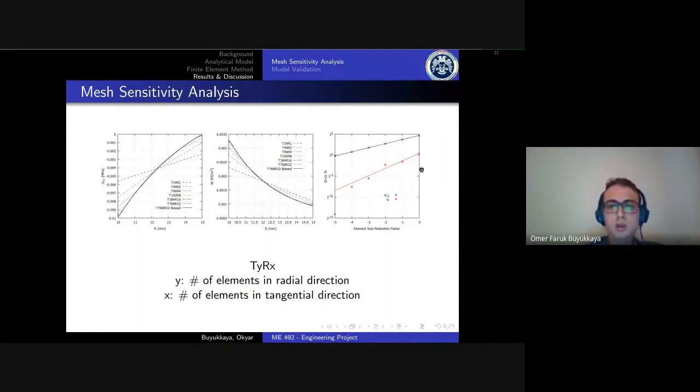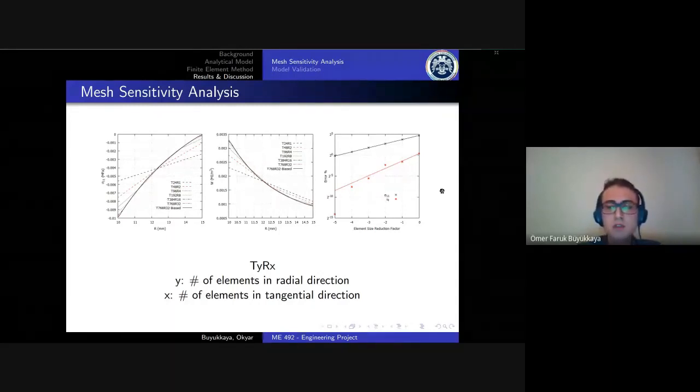We can see the displacement values converge much faster when compared to the radial stress. This is because finite element calculates the displacement values before the stress values and derives the stress values from the displacements.